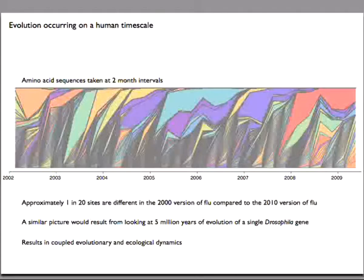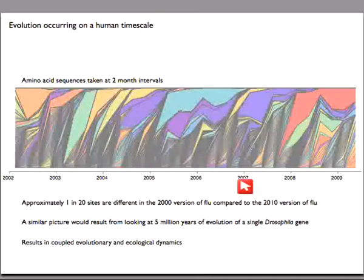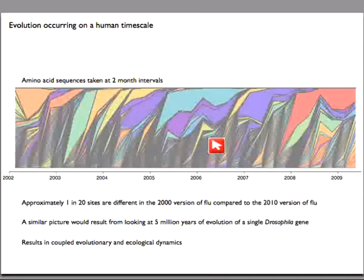Here is a schematic of really how quickly flu evolves. These are amino acid sequences gathered from the database, each different color representing a different sequence. You can see that at any given moment there's a lot of different sequences around, but on the whole the population turns over very rapidly — from 2002 to 2009, these 120 sites have differed roughly in flu. If you made this same picture with a Drosophila gene and took five million years rather than seven-ish years, you'd get something that looks very similar.